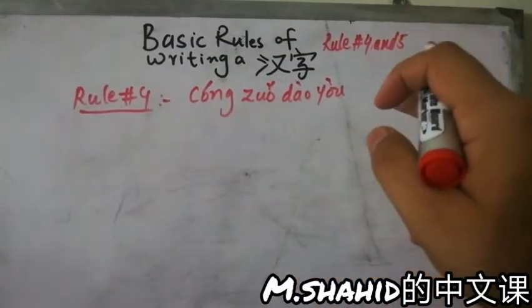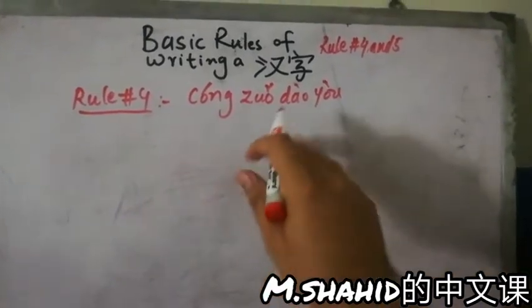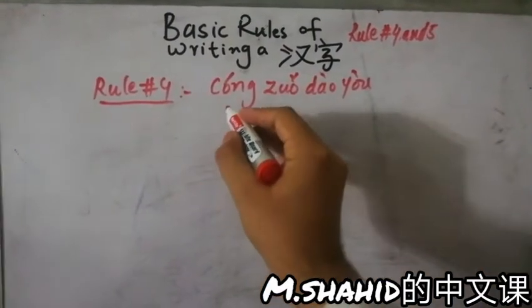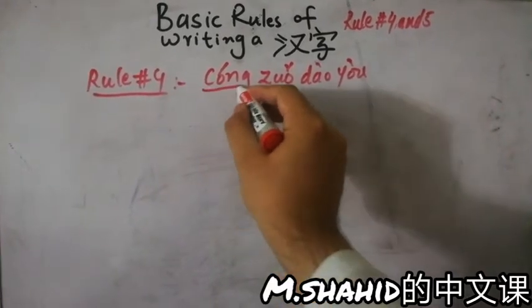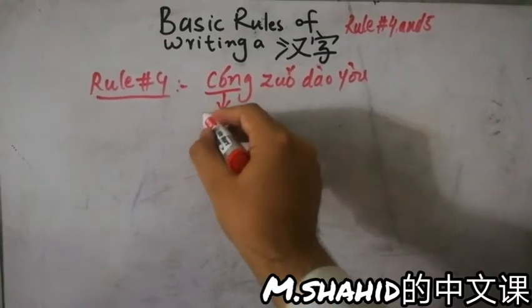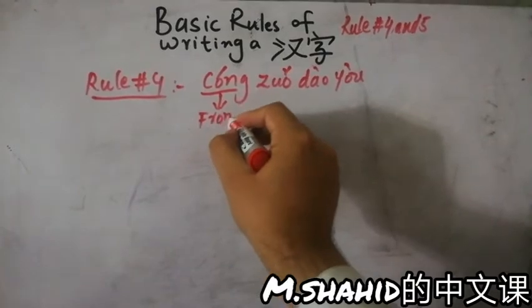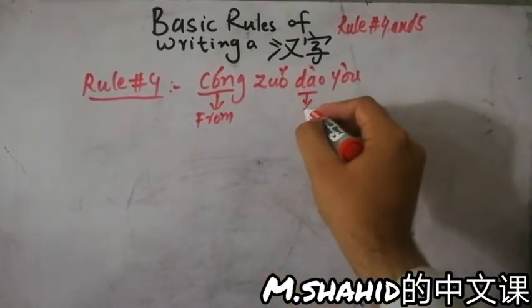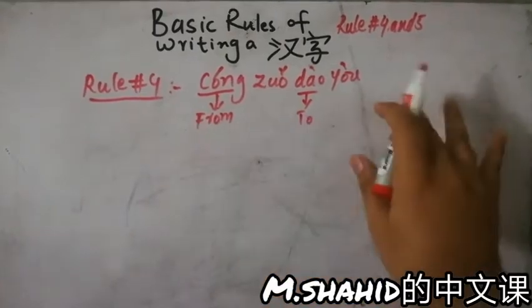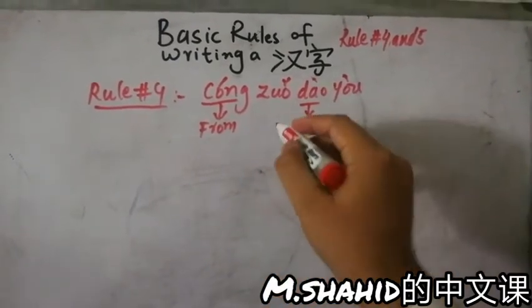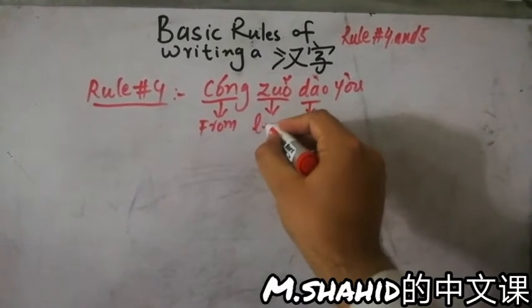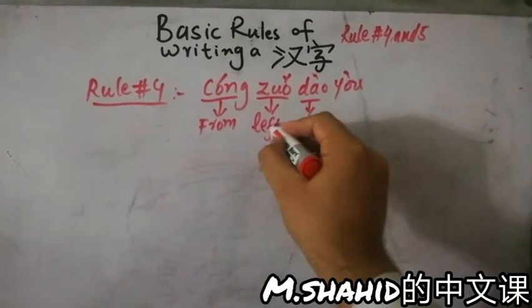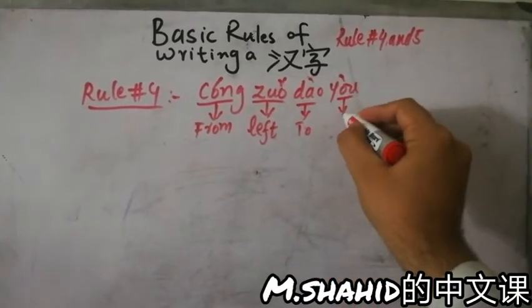Cóng zuǒ dào yòu. I will tell you what does it mean. Cóng means from, zuǒ means left, dào means to, and yòu means right.